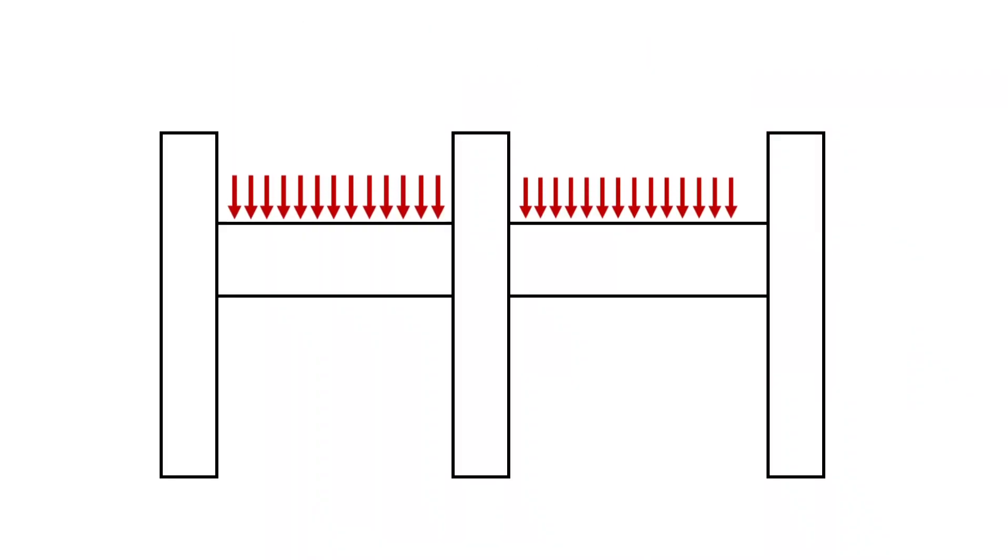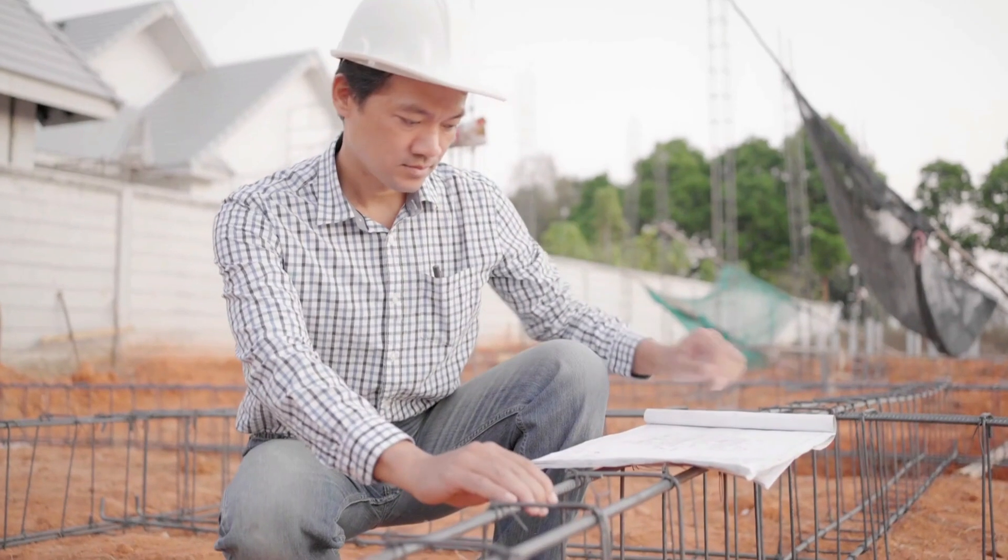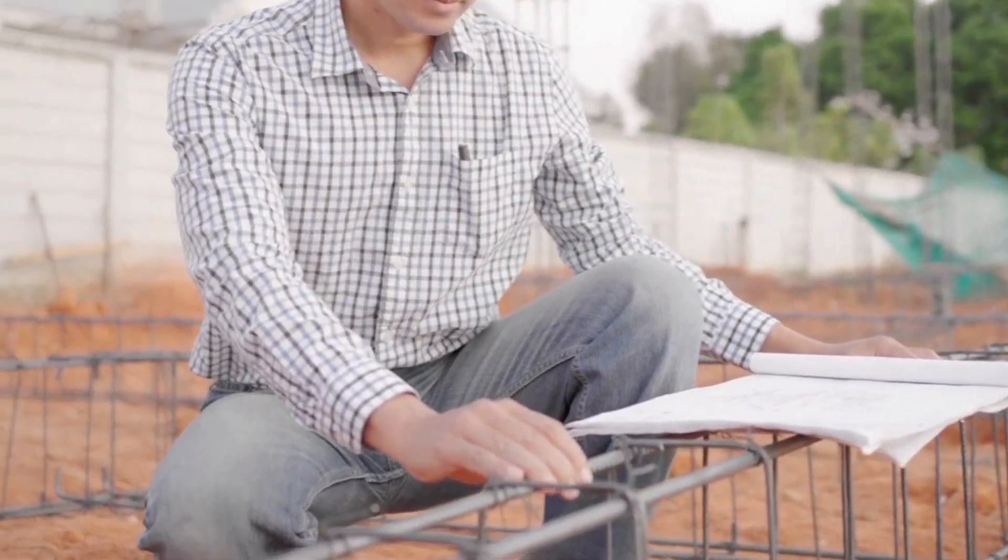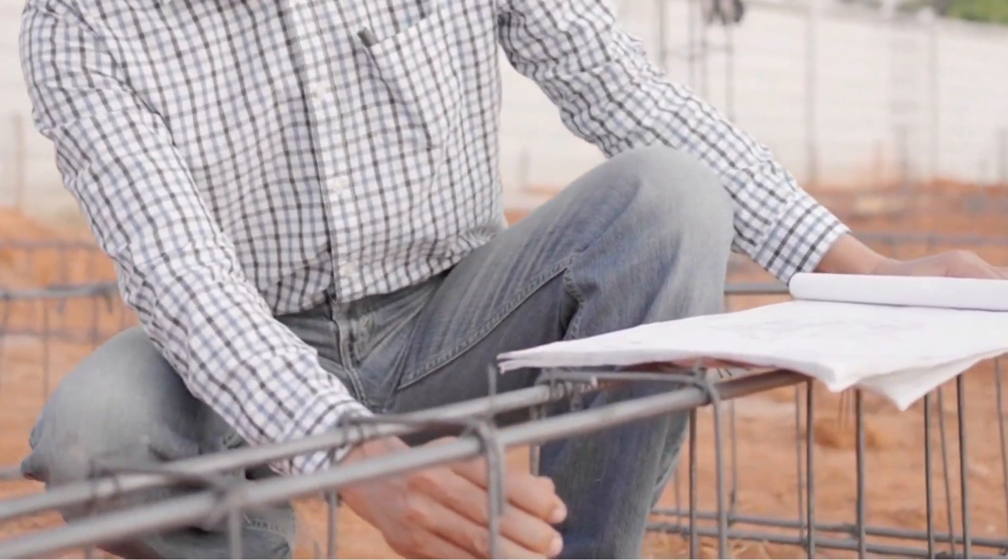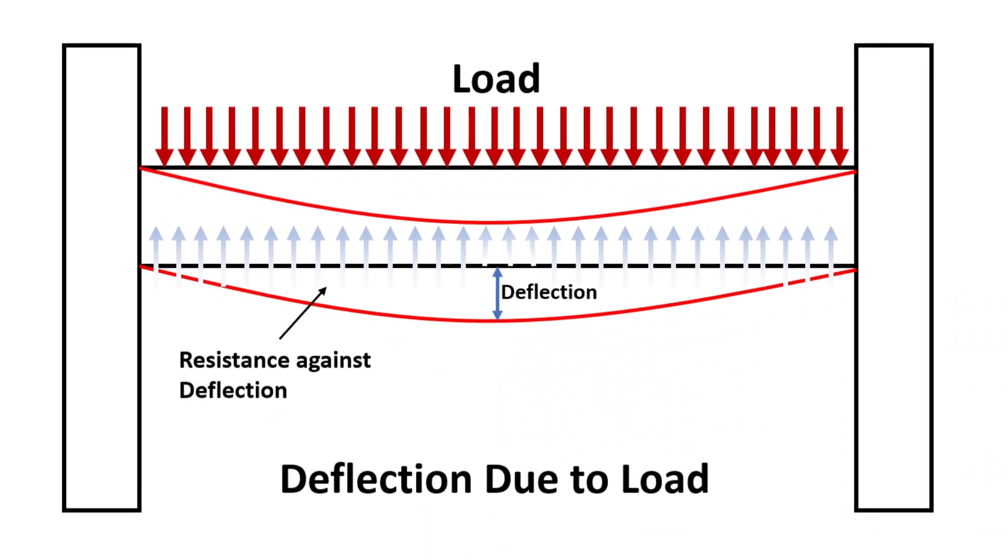When a load is applied on a beam, it tends to deflect the beam and generates some bending moment within the beam. The primary role of a beam is to withstand the moment generated by the load applied to it. As the beam opposes deflection, it generates a substantial moment which it must endure.